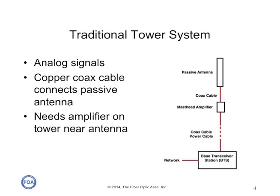Traditional cell towers use copper coax cables. The network feed goes into a base transceiver unit, which drives analog signals up the tower over a coax cable to a masthead amplifier, which is connected by a short coax cable to a passive antenna. The coax has very high attenuation, so the final amplifier is needed to provide adequate signal to drive the antenna.